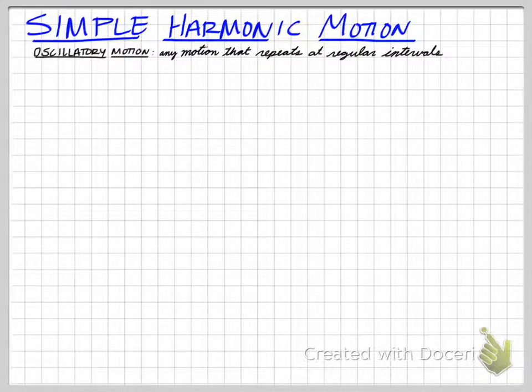So if you drop a ball and it bounces on the ground and it continues to bounce on the ground, that's oscillatory motion. One oscillation would be the ball starting at the top, hitting at the bottom, and returning to the top.